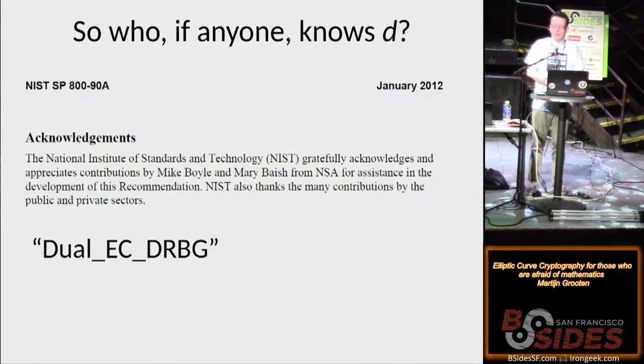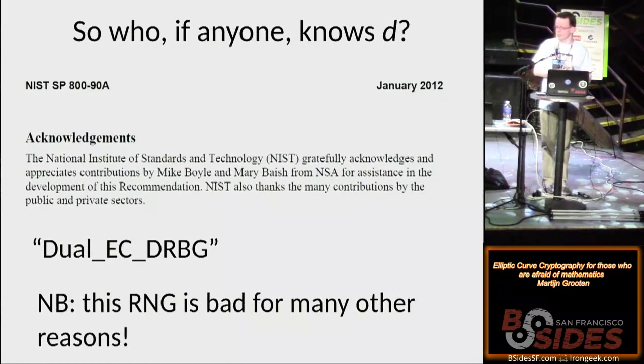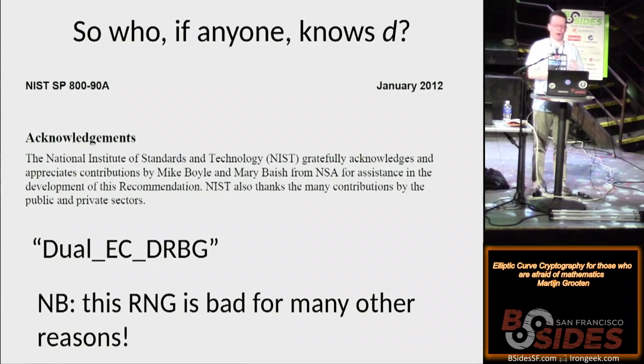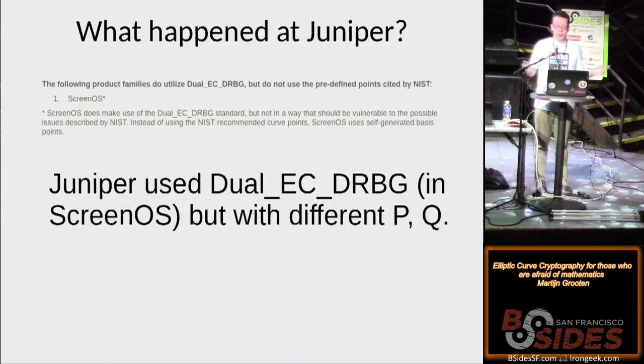As most of you will probably have guessed, this is the algorithm Dual_EC_DRBG, which has been making the news a lot in recent years. And I should also point out, I suggested that it was a good idea to use elliptic curves for random numbers, actually it isn't. Matt Green has written a great blog post about this. For example, it is an extremely slow algorithm, so even if you thought no one knew d, it was still a bad idea.